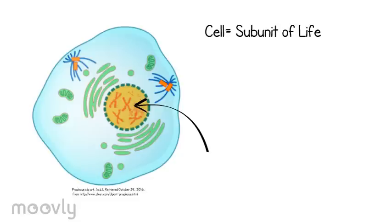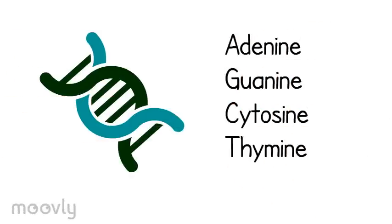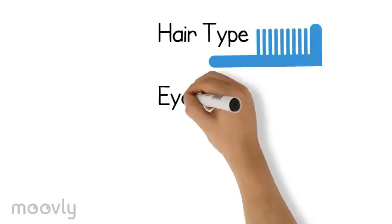Inside these cells are a set of instructions called DNA. DNA is made up of the bases adenine, guanine, cytosine, and thymine. You can think of these bases as instructions that code for genes in your body. For example, the DNA contains instructions for traits such as hair type, eye color, and height.